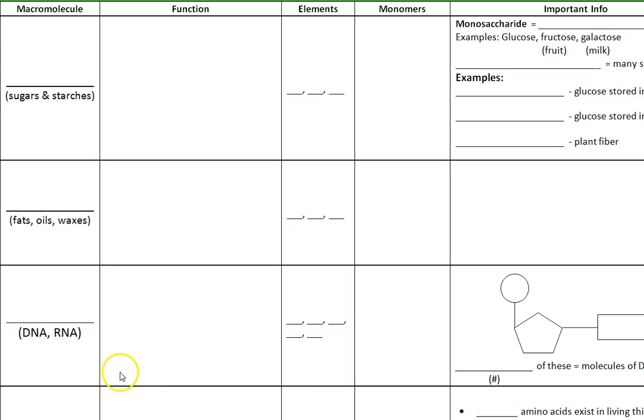All right, so I'm going to go over the four macromolecules that we have on a table that you should have in your packet. First one, sugars and starches, is carbohydrates.